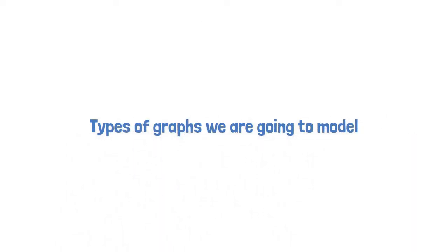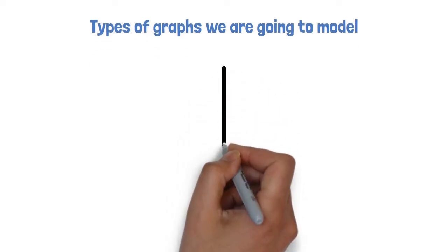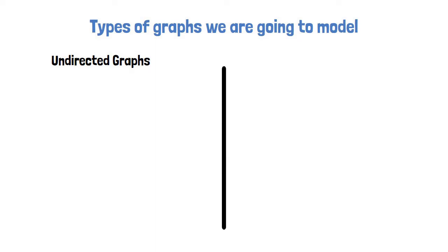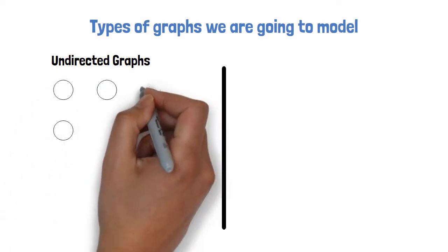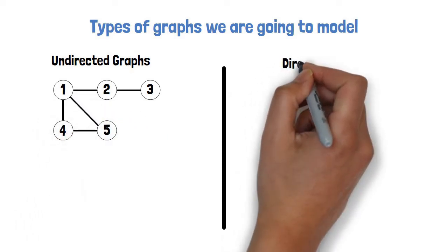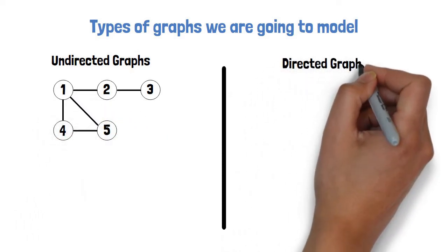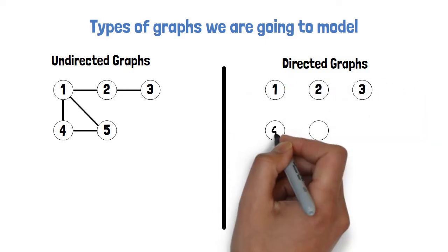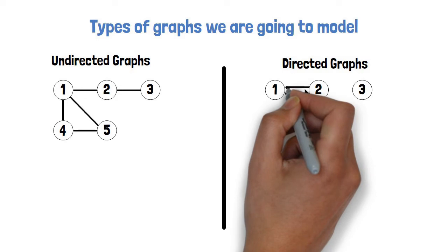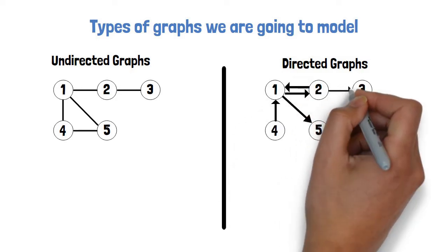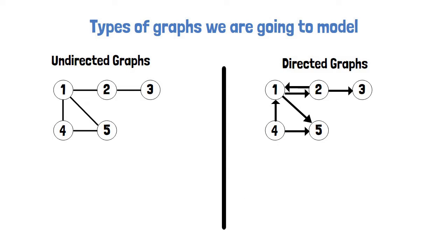Let's now define better what graphs we are going to model. First are undirected graphs, as in the example we just saw. Second are directed graphs. Differently from undirected graphs, in directed graphs edges have orientation. For example, when looking for a shortest path like we did before, we can't travel on an edge in the opposite direction.